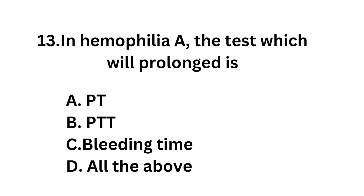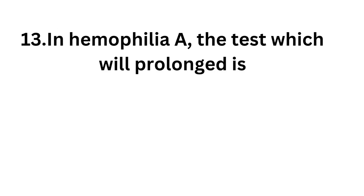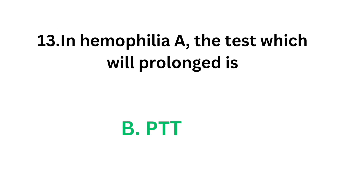Question number thirteen: in hemophilia A, the test which is prolonged is — option A PT, option B PTT, option C bleeding time, option D all the above. The correct answer is option B, PTT, partial thromboplastin time.